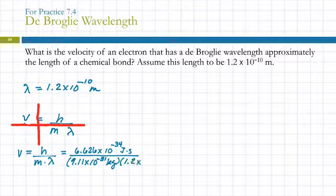And then we need the wavelength. So down here, 1.2 times 10 to the minus 10 meters. So we can do the math. 6.626 ee minus 34 divided by 9.11 ee minus 31 divided by 1.2 ee minus 10.